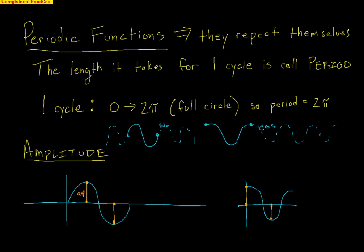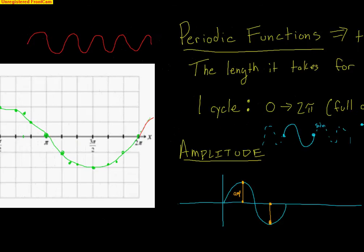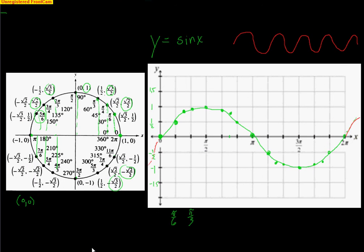Hopefully you're able to understand how to graph these functions. The first thing to get past is understanding that x is the input angle. For sine, the output y is the y-coordinate from the unit circle. For cosine, the output y is the x-coordinate from the unit circle. Once you understand that, it becomes pretty easy to make graphs of these. We'll talk more about other graphs and transformations in the next video.